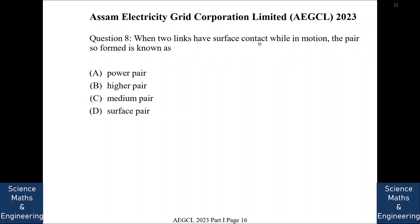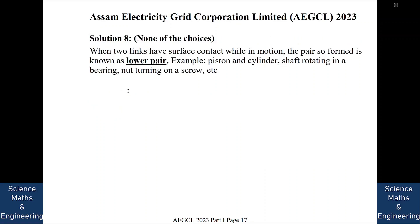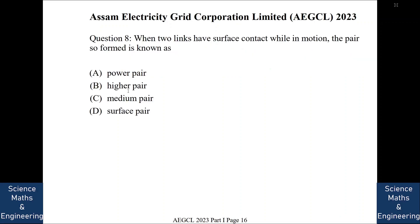When two links have surface contact while in motion, the pair so formed is known as, so the answer is, so it is known as a lower pair. So none of these choices is the correct answer. So if you have surface contact, it is known as a lower pair. If we have a point or line contact, it is known as a higher pair. Now lower pair examples of piston and cylinder, a shaft rotating in a bearing or a nut turning on a screw.